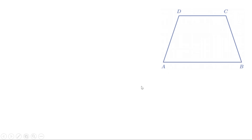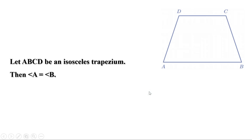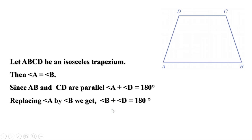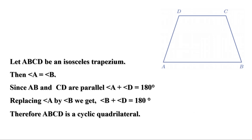Let ABCD be an isosceles trapezium. Then angle A and angle B are equal, and similarly angle D and angle C are also equal. AB and CD are parallel lines and AD is a transversal cutting these parallel lines, so angle A and angle D are co-interior angles and therefore supplementary: angle A plus angle D equals 180 degrees. Replacing angle A by angle B, angle B plus angle D is also equal to 180 degrees. That means one pair of opposite angles are supplementary. Therefore, ABCD is a cyclic quadrilateral, or isosceles trapeziums are cyclic quadrilaterals.